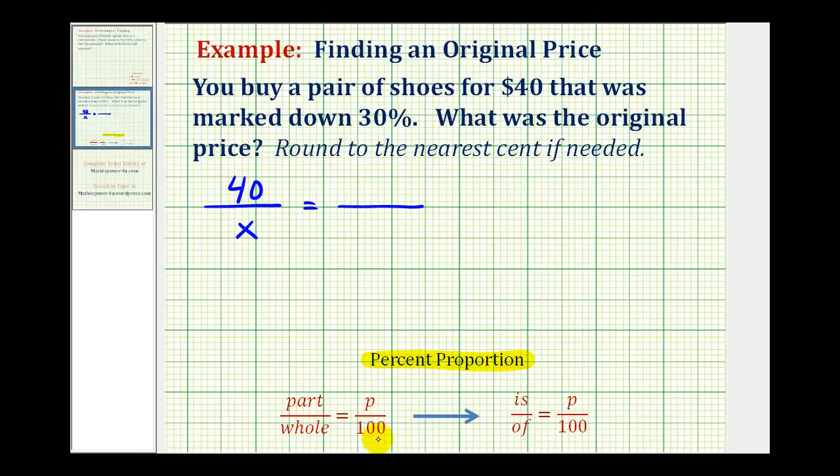And the second ratio is formed by the percent that we actually paid, not the discount. Again, to keep it consistent with the amount paid to the original, we want this ratio to be the percent paid. Well, if it's marked down 30%, that means we paid 70%. So 70% as a fraction, or a ratio, would be 70 to 100.